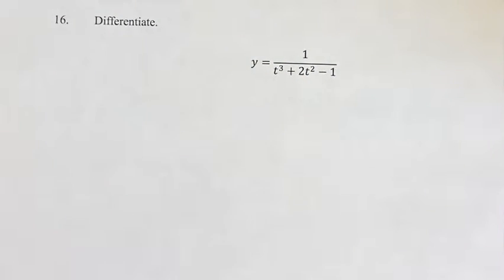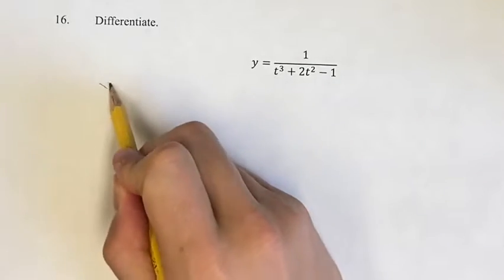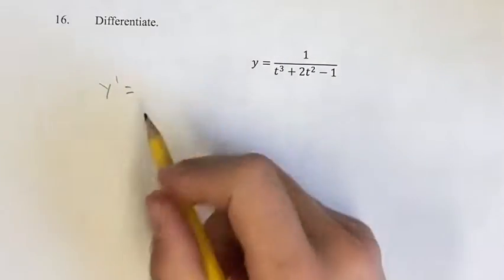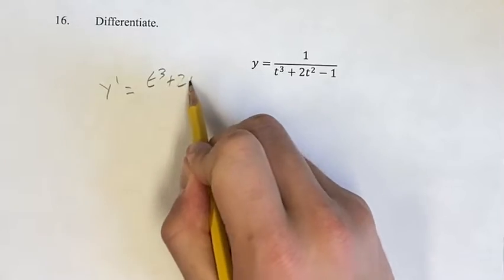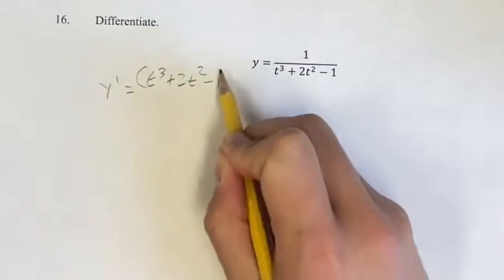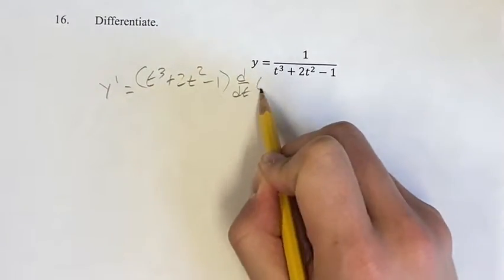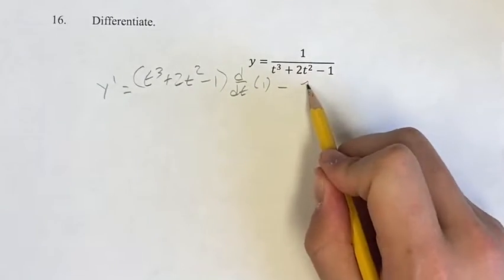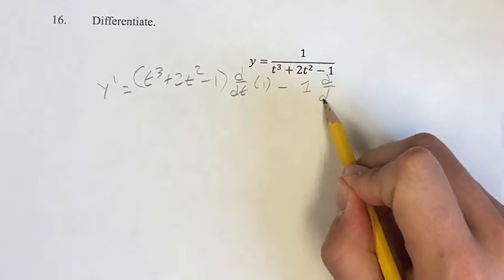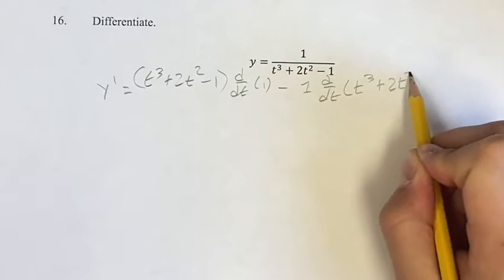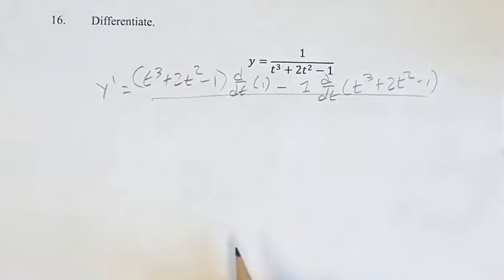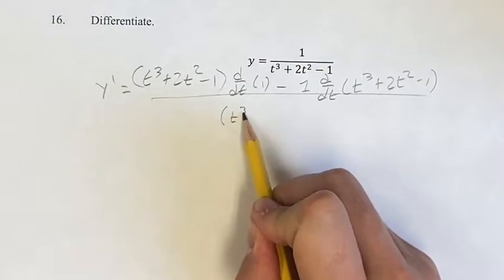Since we have a fraction here, we can use the quotient rule. Our derivative is going to be the denominator, t cubed plus 2t squared minus 1, times the derivative of the numerator, minus the numerator times the derivative of the denominator. This is over the square of the denominator.